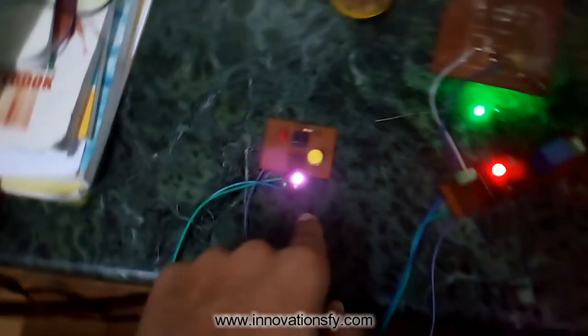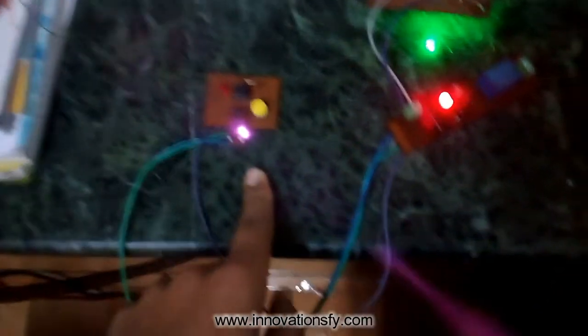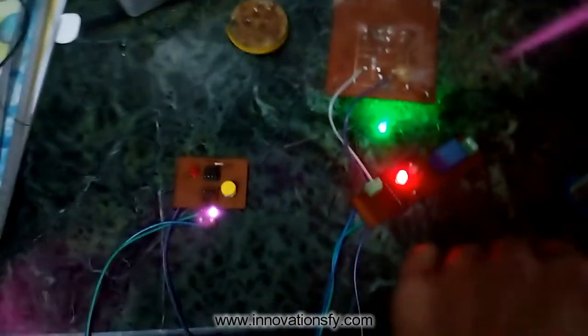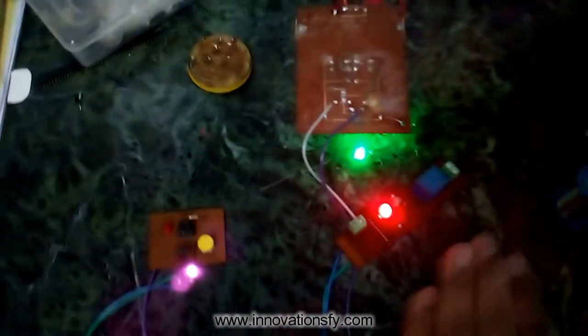This one is the sensor part which will detect the hand gesture or motion without any contact. And this one is the actuating part with whom our appliance or any device will be connected so that it can turn on and off.